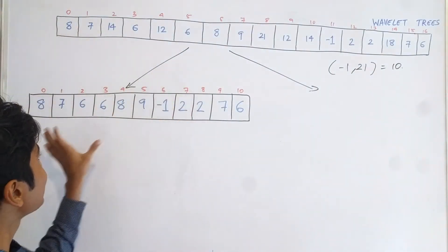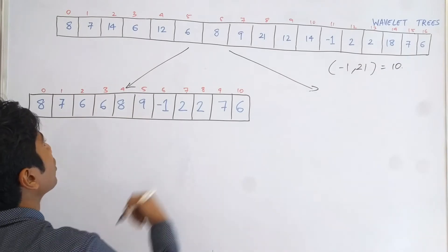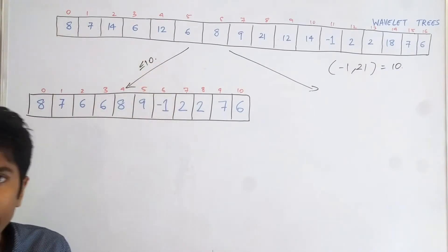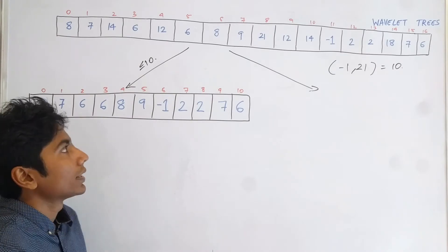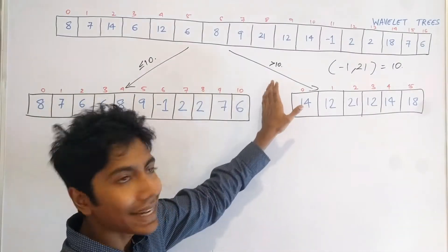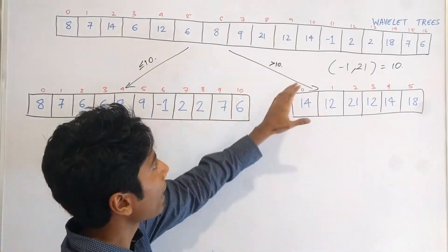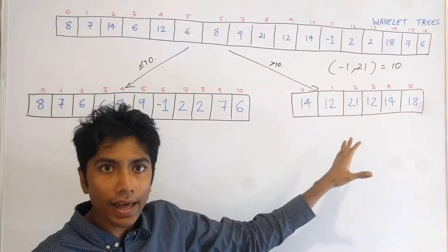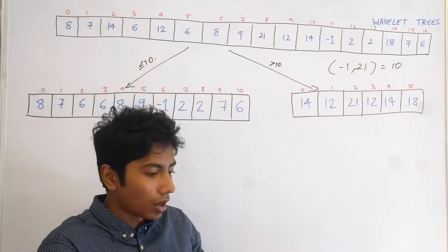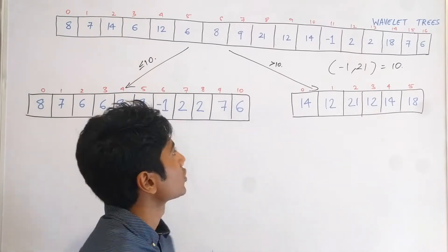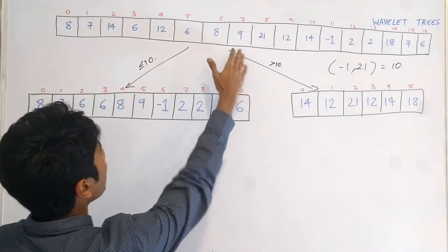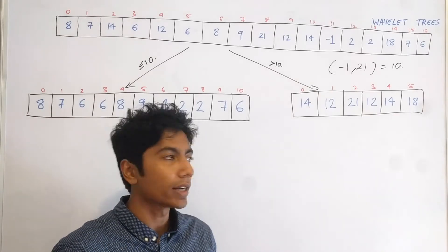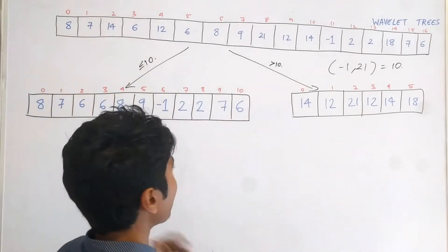On the left side you see all elements smaller than 10 have fallen in place — these are less than or equal to 10 — and the ordering is maintained because that's exactly what we want. All elements greater than 10 go to the right. The mapping between these elements and their respective places in the left and right subarrays is maintained using a map array — the number of elements to the left — which has been discussed in detail in the previous video.